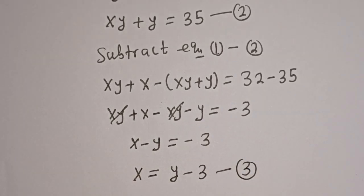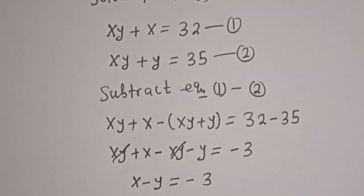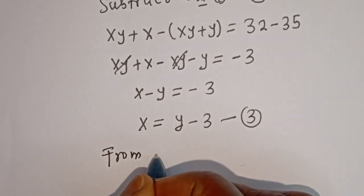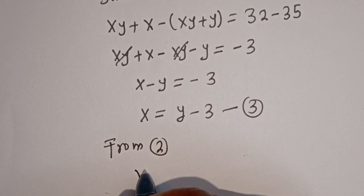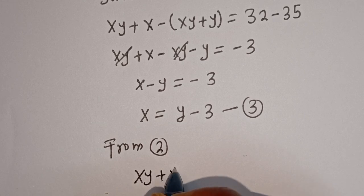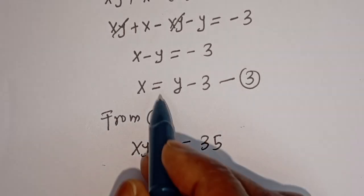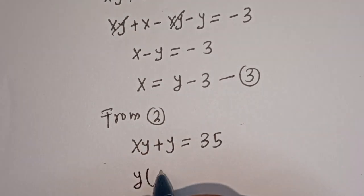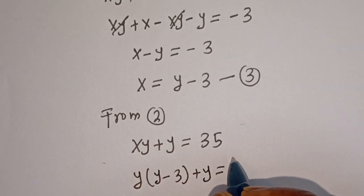Now we can substitute equation 3 into equation 2. From equation 2, x y plus y equals 35. We know that x is equal to y minus 3, so we substitute to get y bracket y minus 3 plus y equal to 35.